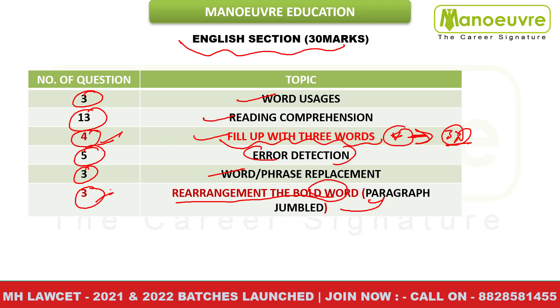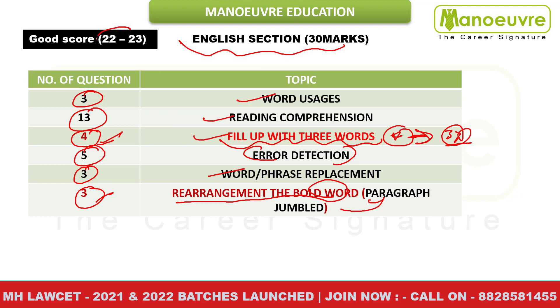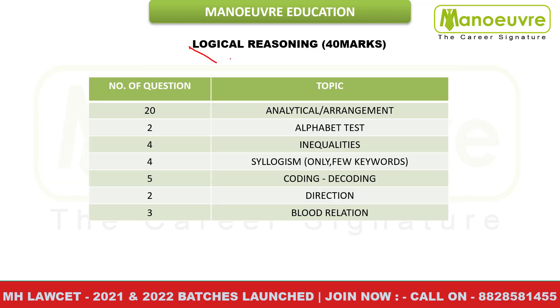So 4 plus 3, yeh 7 questions were new types, guys. But even then you can manage the questions — itna tough question nahi tha. If you have prepared well, a good score for this section is nothing but 22 to 23 marks.